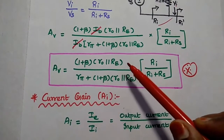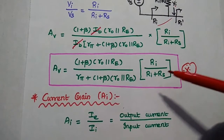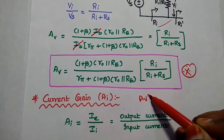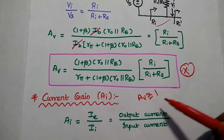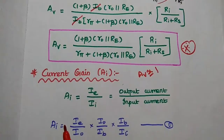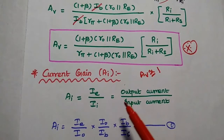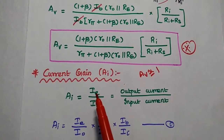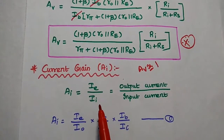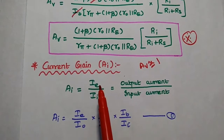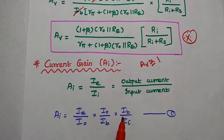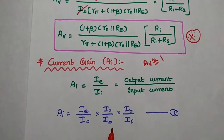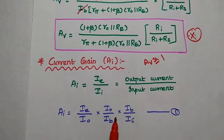If Ro is much greater than Re and Ri is much greater than Rs, then the voltage gain is approximately equal to 1 — that is unity. Next is current gain, which is the ratio of output current to input current. The actual output current is IE — the emitter current. In between, there are two currents: IB, the base current to the transistor, and IO, the mid output current.